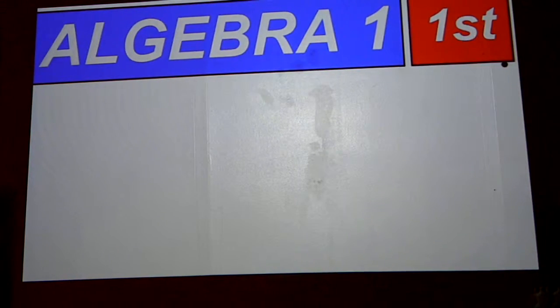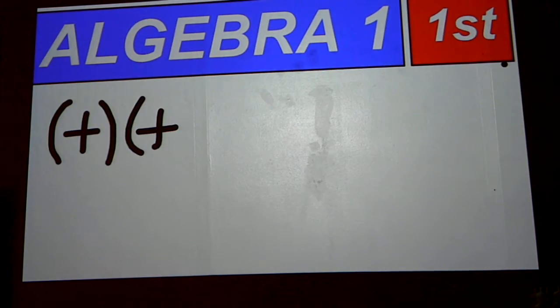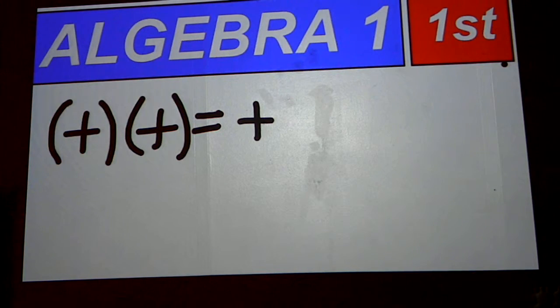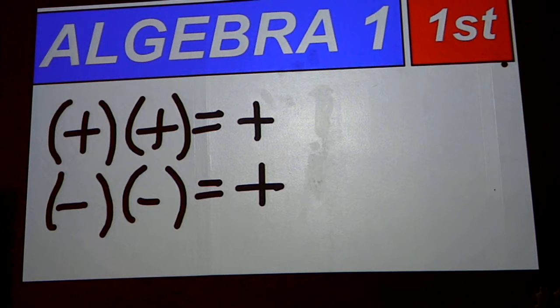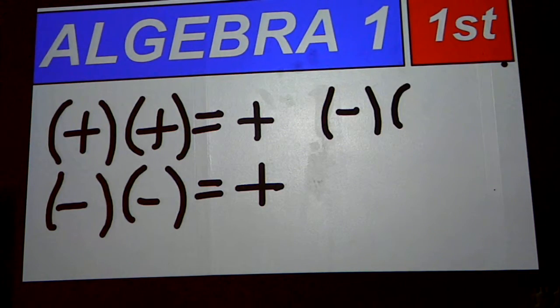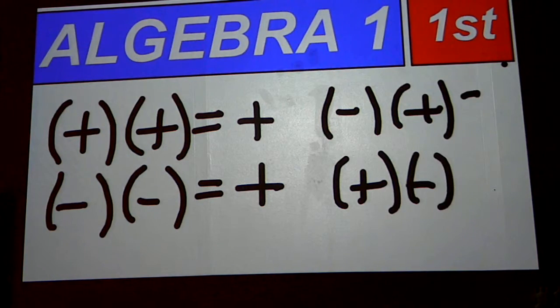First off, the rules of multiplying positive and negative numbers. If you multiply two positives together, you will end up with a positive. If you multiply two negatives together, you will get a positive. If the signs are different, such as negative times positive or positive times negative, then the answer will always be negative.